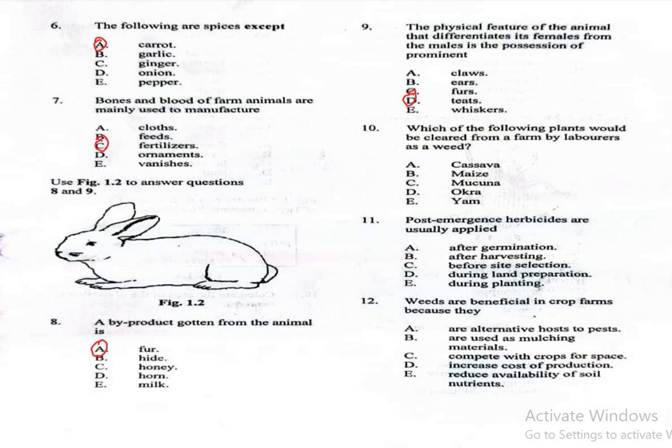Question 10. Which of the following plants would be cleared from a farm by laborers as a weed? A. Cassava, B. Maize, C. Mucuna, D. Okra, E. Yam. The right answer is Mucuna, which is option C. Why did I pick that? Another name for Mucuna is velvet bean. It can grow aggressively and can be considered a weed if not controlled.